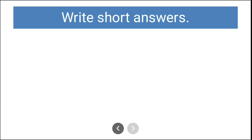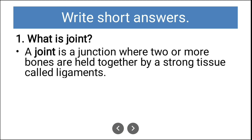Short answers. What is a joint? A joint is a junction where two or more bones are held together by a strong tissue called ligaments.